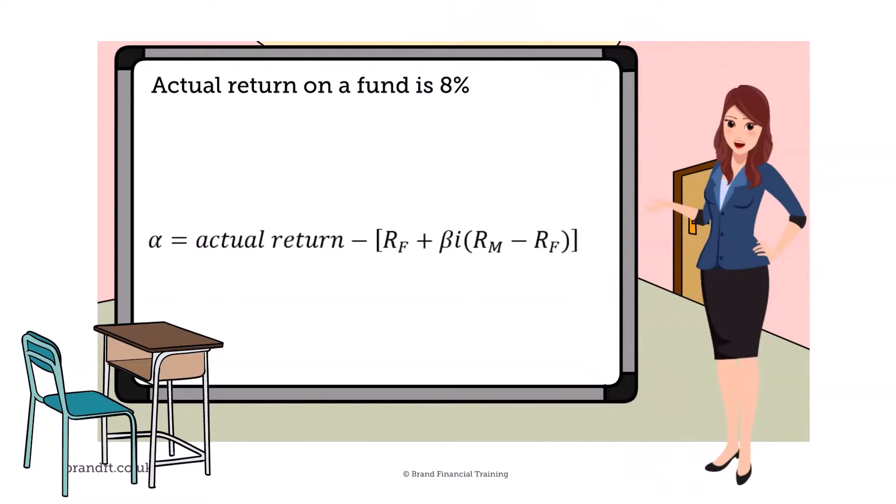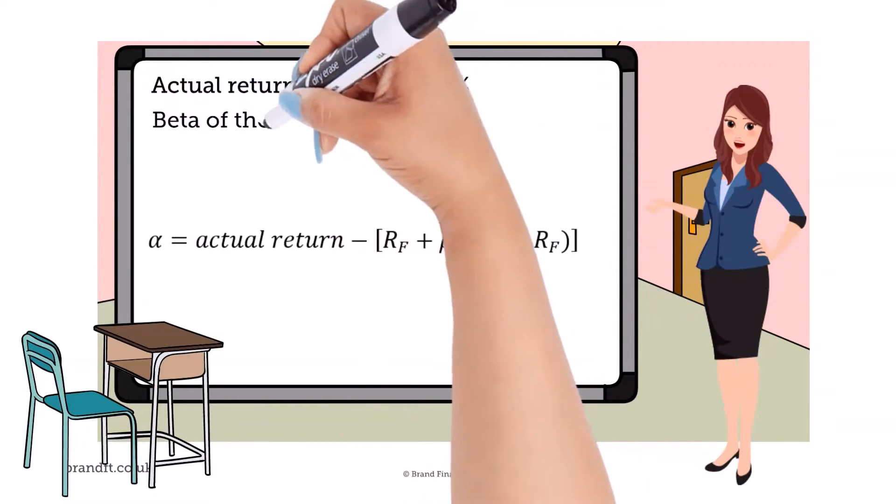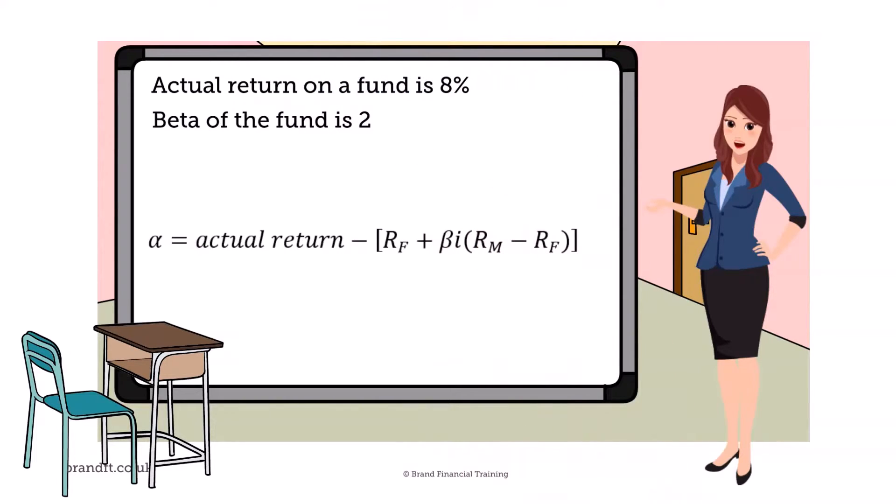Let's say the actual return on a fund is 8%, the beta of the fund is 2, the return on the market is 7%, and the risk-free rate is 3%.